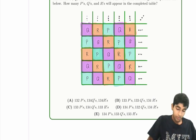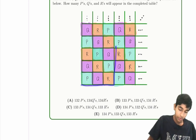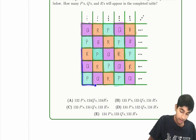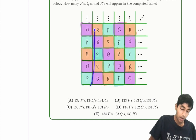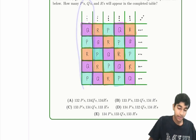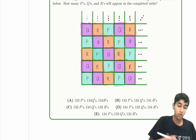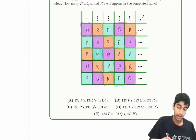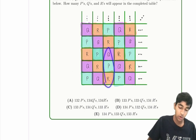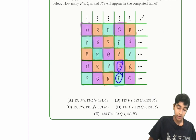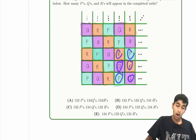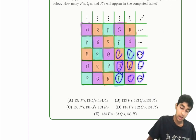It seems like we essentially have this square just keep repeating on and on. The first line is P, Q, R repeating. The second line is Q, R, P repeating. The third line is R, P, Q repeating. And then it goes back to the beginning again: P, Q, R; Q, R, P; R, P, Q. And it just keeps going.